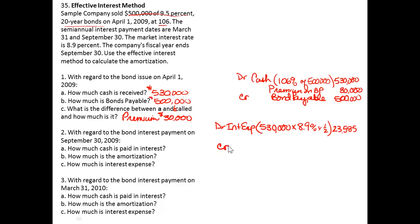Now each time we pay interest, we know that we're going to pay interest based on the bond, $500,000, times the bond's or stated rate, 9.5%, for half a year. Because we send out these checks every six months. So that's $23,750.